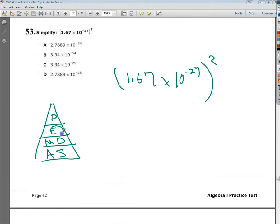So if I'm raising 1.67 to the second power, the best I could hope for with my negative 27th exponent would be to multiply the two numbers together.